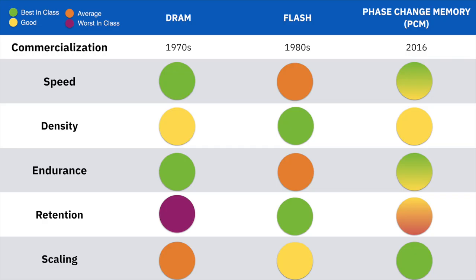Phase change memory is arguably the most advanced emerging non-volatile memory technology. It is already being commercialized in conventional computing systems with much faster access times than flash memory. It is also being explored for emerging computing paradigms such as in-memory computing and brain-inspired neuromorphic computing.